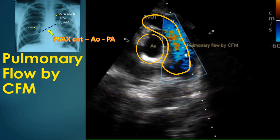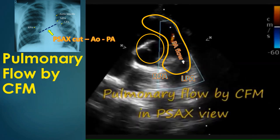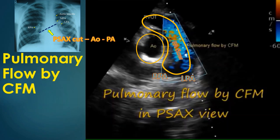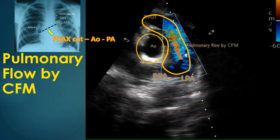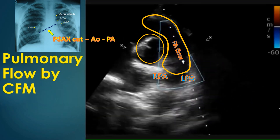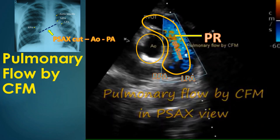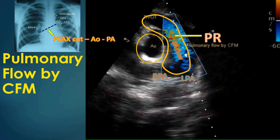The pulmonary artery is identified by its bifurcation into left and right pulmonary arteries. Color Doppler shows a blue flow directed away from the transducer. A tiny reverse flow of pulmonary regurgitation can be seen in most individuals, appearing like a tiny flame-like jet directed upwards from the pulmonary valve in the closed position.